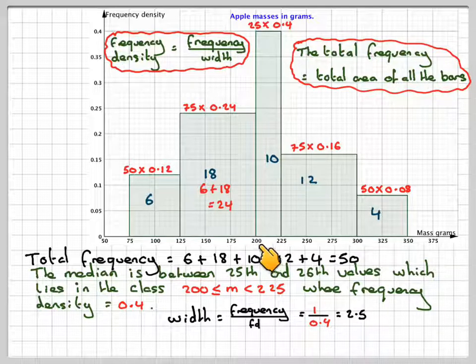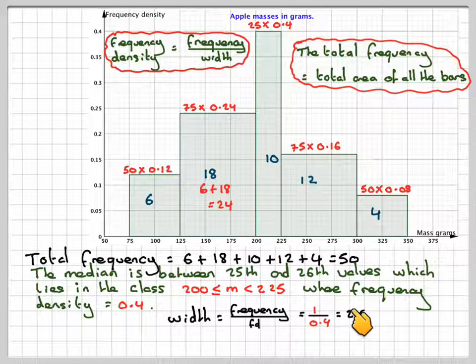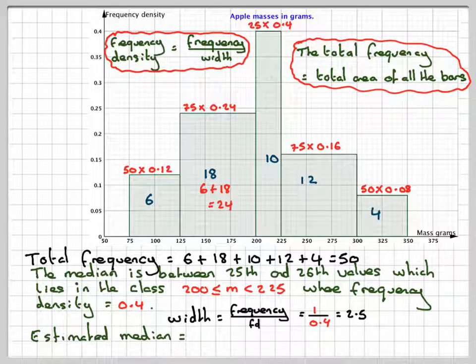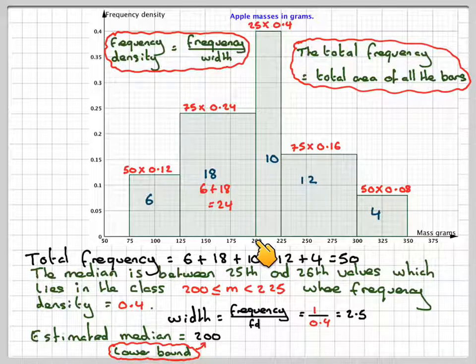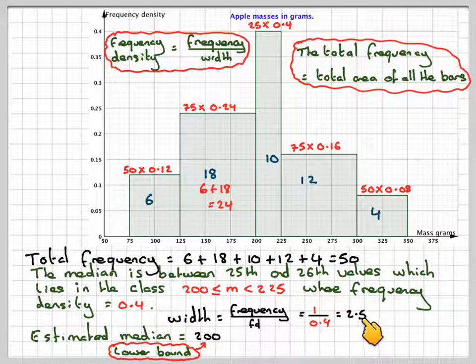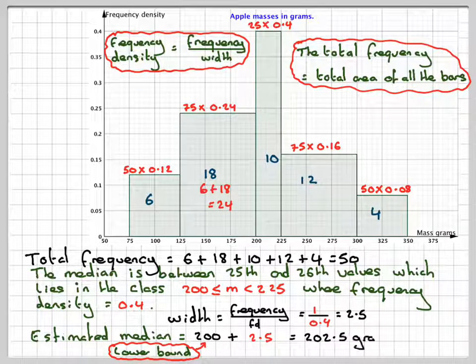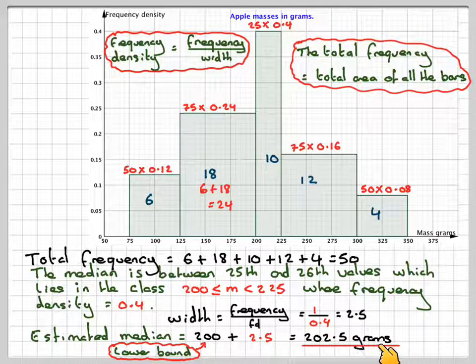So what we need to do now is take the 200 and add it to 2.5. So the estimated median is going to be 200, which is the lower bound of that particular class, plus our extra little bit that represents 1, which is 2.5, which gives me 202.5 grams.